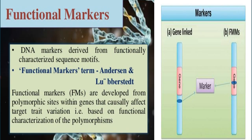Functional markers are developed from polymorphic sites within genes that actually affect target trait variation, based on functional characterization of polymorphism. Unlike regular molecular markers that are merely linked to genes, functional markers are developed from within the polymorphic sites that causally affect target trait variation.